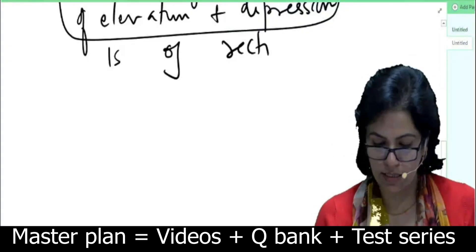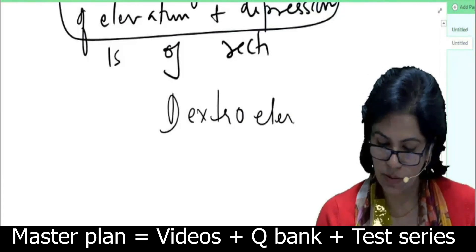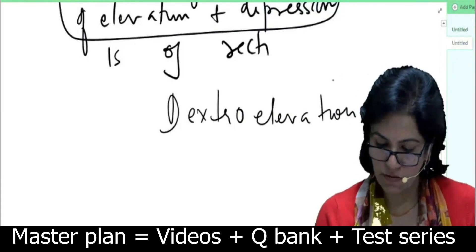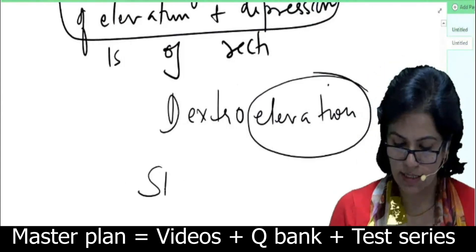If you remember superior rectus, we are saying dextro elevation. Whenever you have to solve, solve like this: dextro elevation - first thing, what are the muscles which elevate? It is superior rectus and inferior oblique.